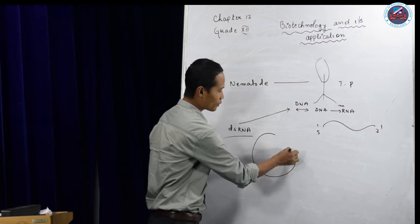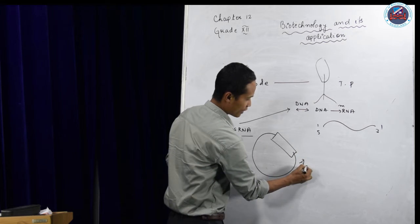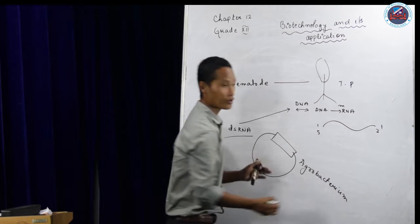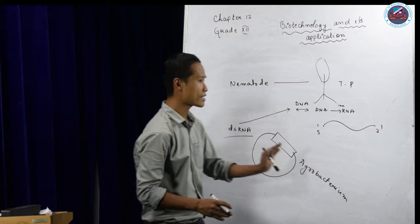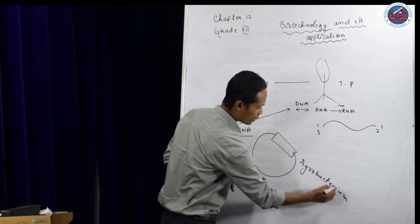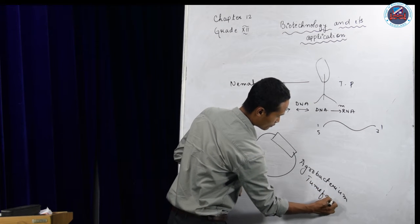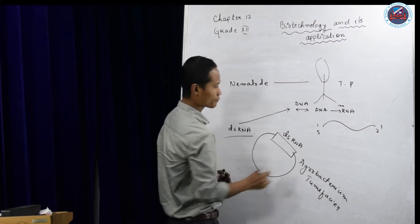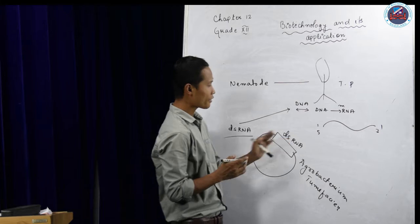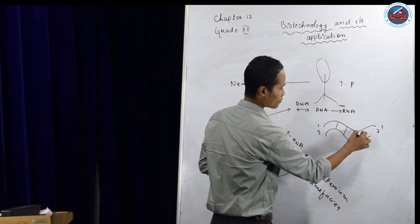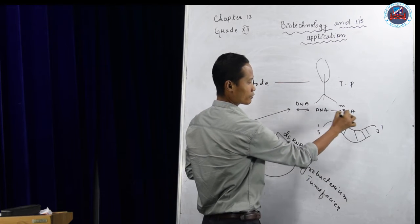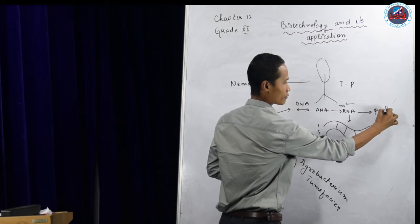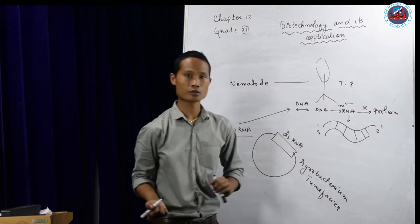With the help of Agrobacterium tumefaciens - I already told that it is one of the plant genetic engineers and we can use it as a cloning vector - we are introducing double-stranded RNA. This double-stranded RNA will go and bind to this process. During the process of DNA to RNA, then this RNA will form protein. We will not allow the protein to be formed.